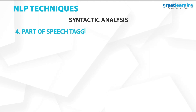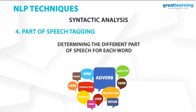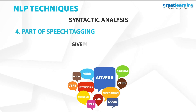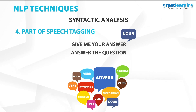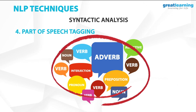The fourth technique is called part-of-speech tagging, which involves determining the different part of speech for each word. Many words, especially common ones, can serve as multiple parts of speech. For example, in the sentence give me your answer, answer is a noun; but in answer the question, answer is a verb. Some languages have more ambiguity than others, and hence figuring out the part of speech is very important. Parts-of-speech tagging involves tagging all words with verb, noun, adjective, etc. to recognize the context of the sentence.